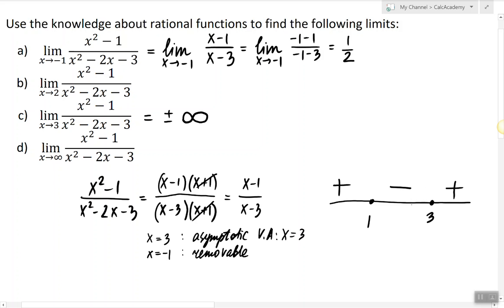So at x=3, on the right side we have positive infinity, and on the left side we have negative infinity. This means the two-sided limit does not exist.